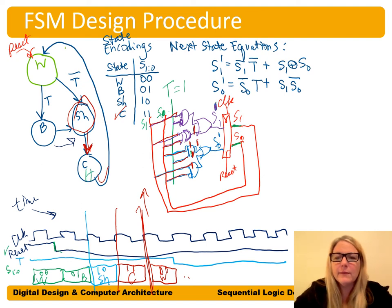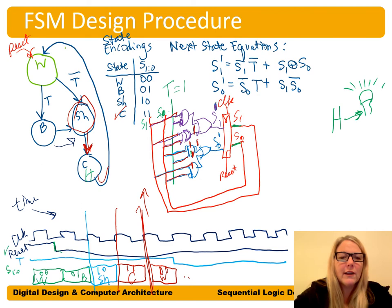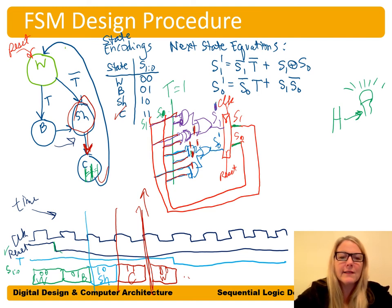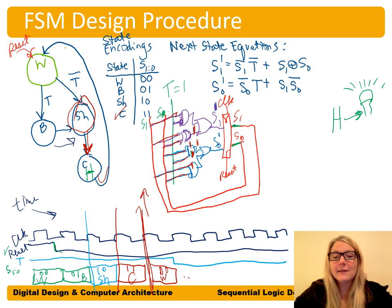Using our encodings (00, 01, 10, 11) for the states, this output table looks just like a truth table. We can write an equation for the happy LED: H = S1 AND S0. We then modify the circuit to add output logic that outputs the happy signal based only on the current state.